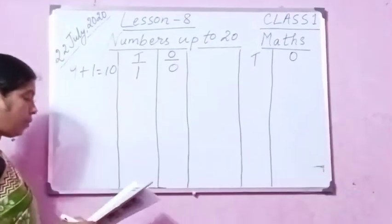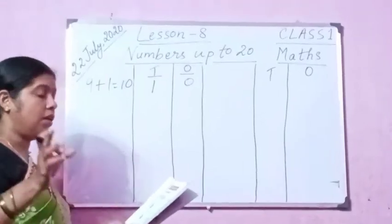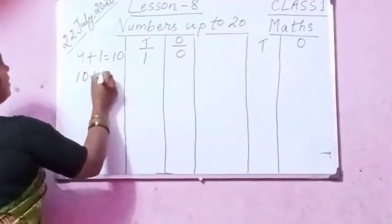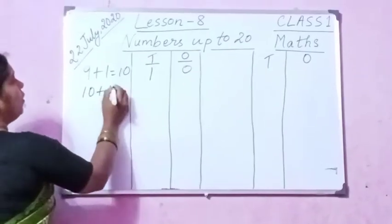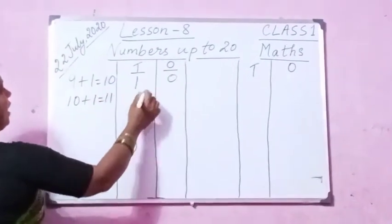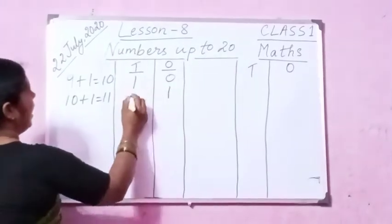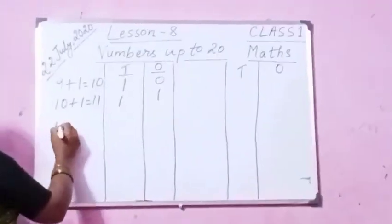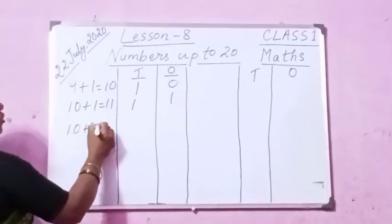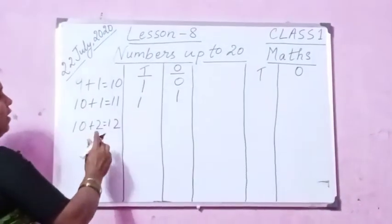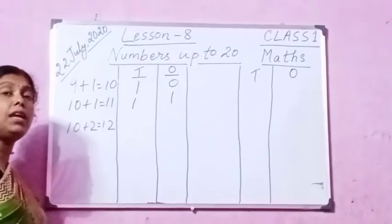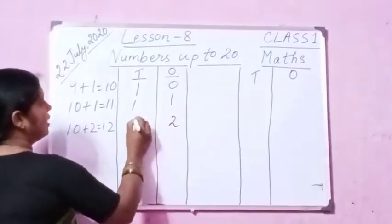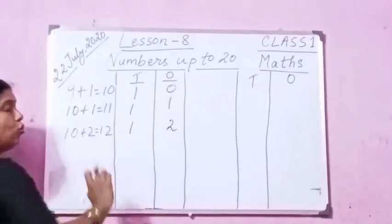Next, 11 means 10 plus 1. 10 plus 1 is 11. 10 and 1 more is 11. So in the ones place you write 1, and 1 ten — that is 1 ten and 1 one. 10 plus 2 is 12. In 12, how many ones are there and how many tens? 2 ones and 1 ten. 10 plus 2 is 12.